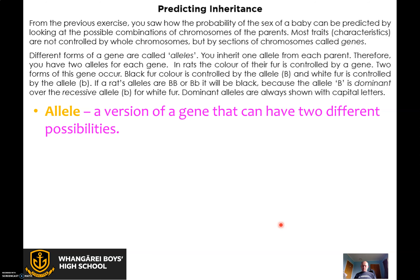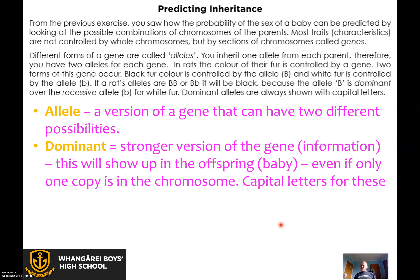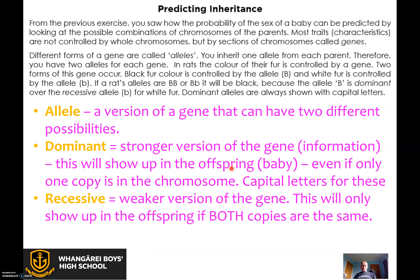An allele is a version of a gene that can have two different possibilities. The dominant version is a stronger version of the gene — information that will show up in the baby. Black fur color is controlled by an allele which is strong, it's dominant, it's got a capital B. White fur is controlled by a weaker allele — recessive, lowercase b. Dominant is a powerful message, capital B. Recessive is weaker and will only show up if both copies are there. If the rat has one or both copies being dominant, the baby rat will have black fur. Please pause the video here and write this stuff down in orange and pink into your books — it's important that you get that because it's the sort of thing you'll need in the test.